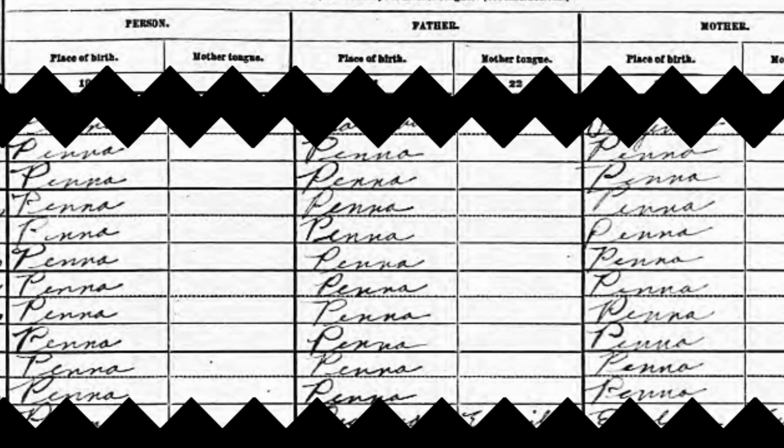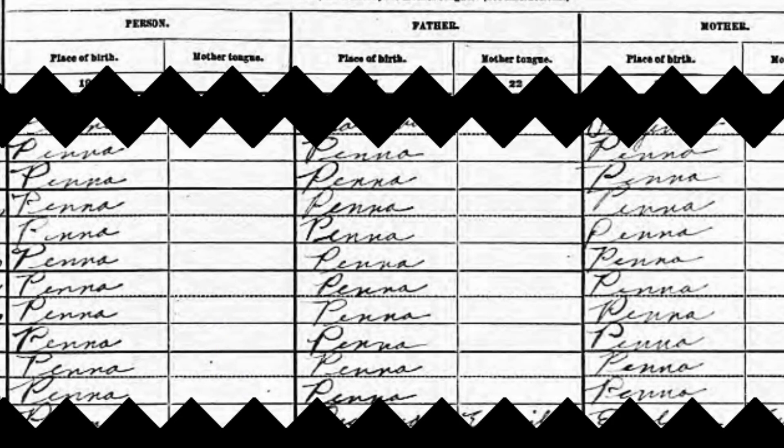Moving over, you can see it shows the sex of the person, the color or race — in this case white — the age at their last birthday, in this case 50 years old, and their marital status. It also shows where they were born and their mother tongue, which would usually be blank if born in the United States since English is assumed. It also shows the same birthplace and mother tongue information for the father and mother. That's just a quick view of what a census record looks like for one census year.